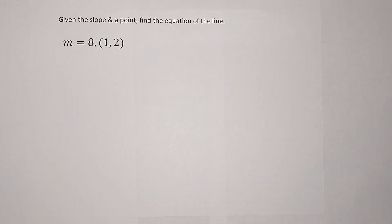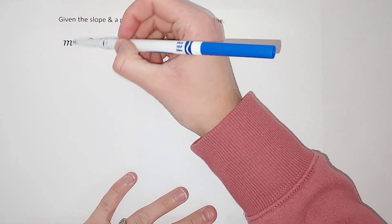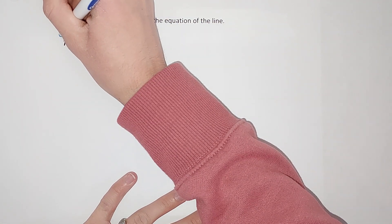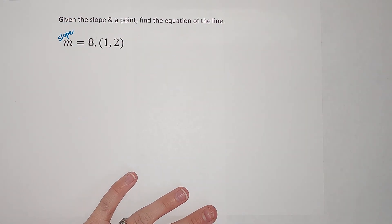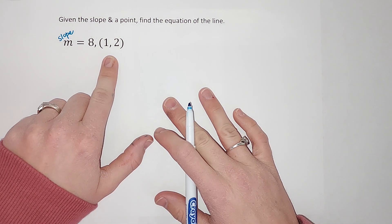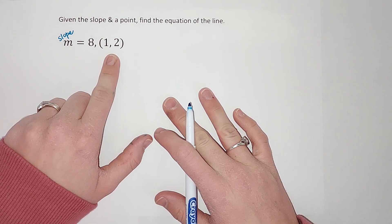So if you're not used to it yet, when we are talking linear equations, we oftentimes label slope with an M. So if you see M, it means slope. So my slope is 8 and we want this line to pass through the point (1, 2).